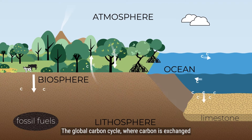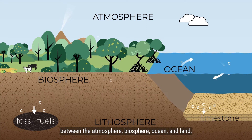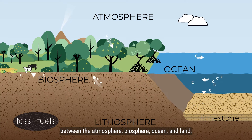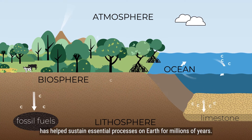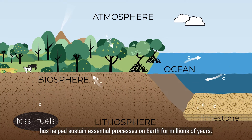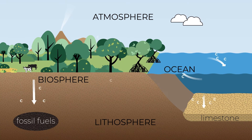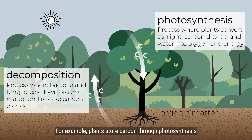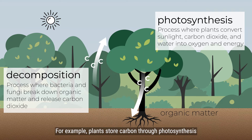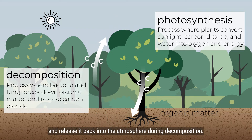The global carbon cycle — where carbon is exchanged between the atmosphere, biosphere, ocean, and land — has helped sustain essential processes on Earth for millions of years. For example, plants store carbon through photosynthesis and release it back into the atmosphere during decomposition.